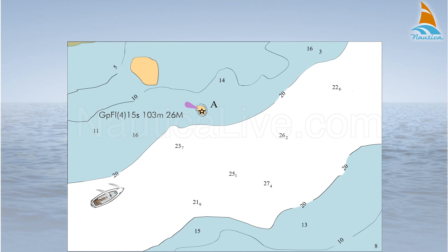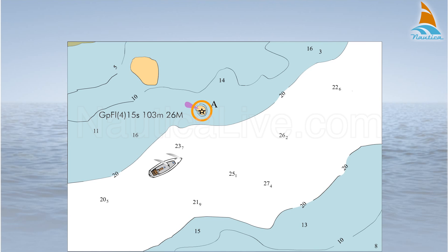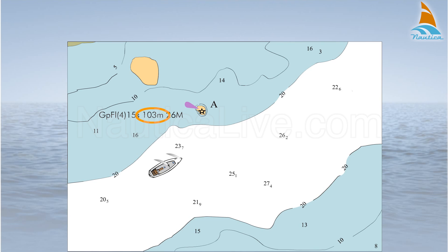Let's assume you sail near the coast and, looking on your nautical chart, you spot the lighthouse A. Among the characteristics of the lighthouse, you read that it has a charted height of 103 metres or 338 feet. This is the height above mean high water spring tide.